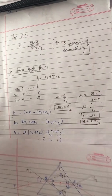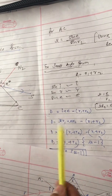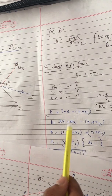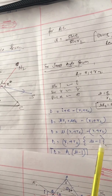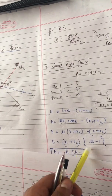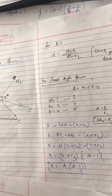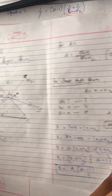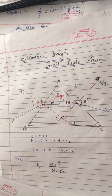So combining these results, we get D equals A times (mu minus 1). This is the relationship between the deviation, the angle of prism, and the refractive index. Thank you so much for watching this video. Next, we are going to solve the lens maker formula.